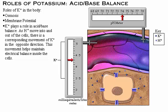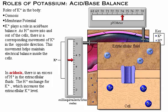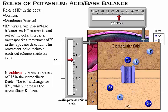Potassium also plays a role in acid-base balance. As hydrogen ions move into and out of cells, there is a corresponding movement of potassium in the opposite direction by ion transport proteins that link hydrogen ion movement to potassium ion movement. This helps maintain electrical balance inside the cells. In acidosis, there is an excess of hydrogen ions; the hydrogen ions exchange for potassium ions, increasing the extracellular potassium level.